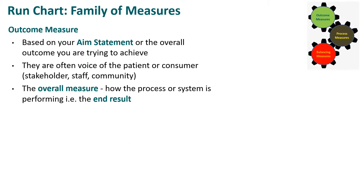So what is an outcome measure? An outcome measure is based on your quality improvement project's aim statement, or the overall outcome that you're trying to achieve. An outcome measure is often the voice of the patient or the consumer, or it might be the stakeholders, staff, or the community. It's the overall measure of how the process or system is performing — in other words, the end result.